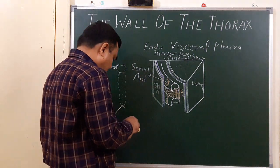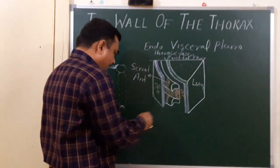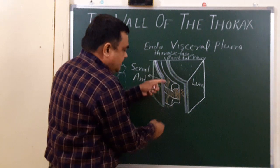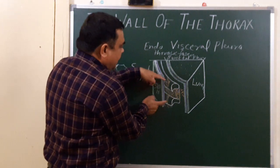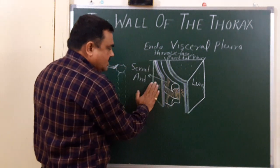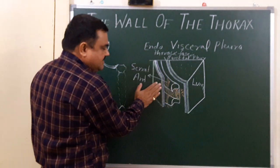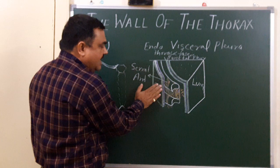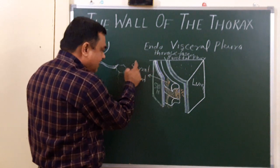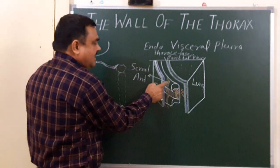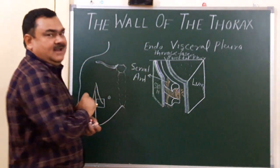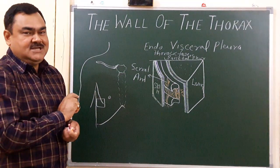So this is the arrangement: skin, superficial fascia, deep fascia, then the extrinsic muscles — the serratus anterior muscle is an extrinsic muscle of the thoracic region.